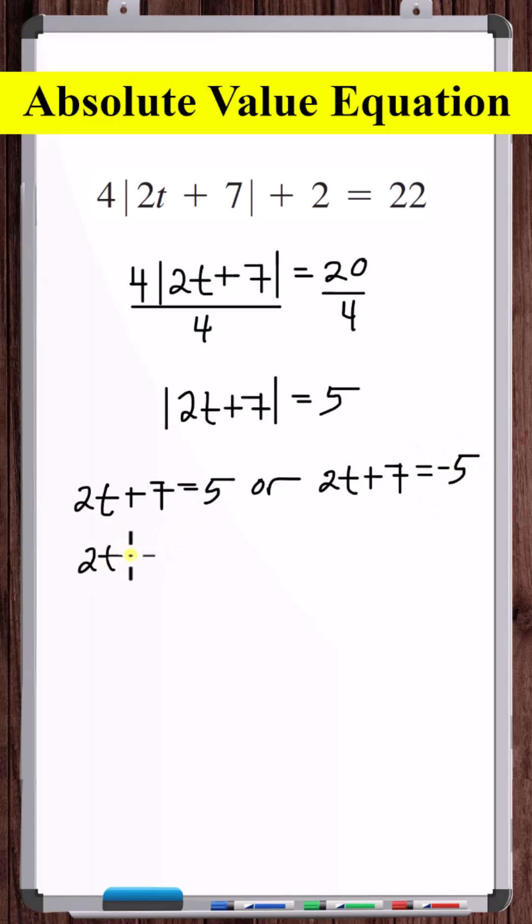Solving this equation, let's subtract 7 from both sides. Divide both sides by 2. So t equals minus 1 is a potential answer.